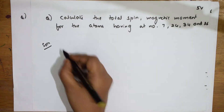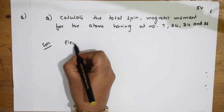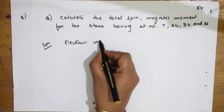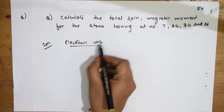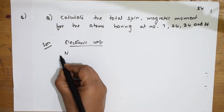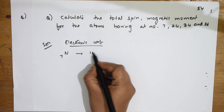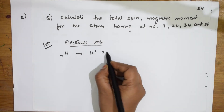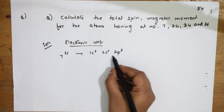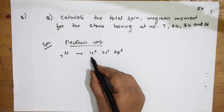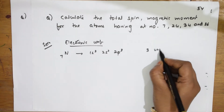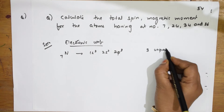Let us start by writing the electronic configurations for all. For atomic number 7, that is nitrogen, the configuration is 1s², 2s², 2p³. The 1s and 2s are filled. We have three unpaired electrons.